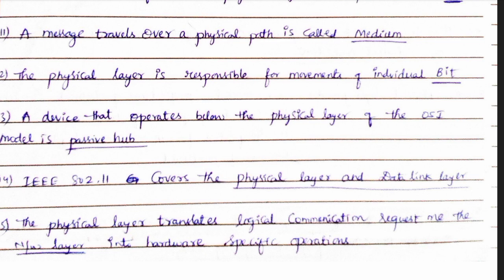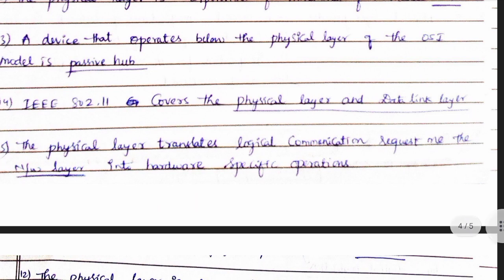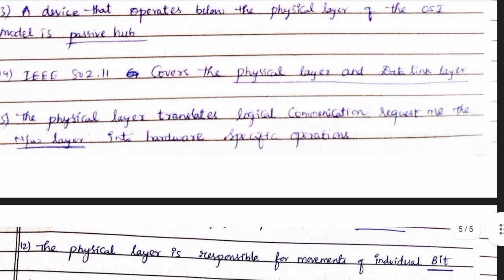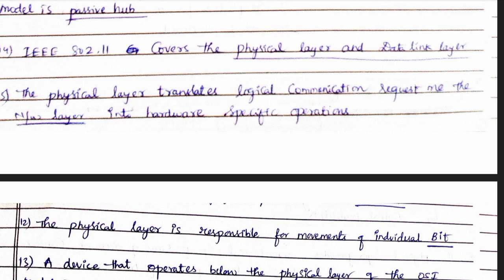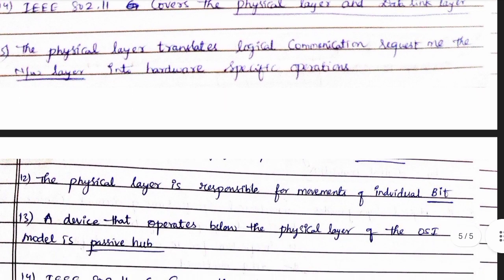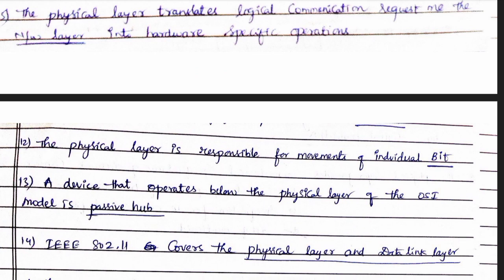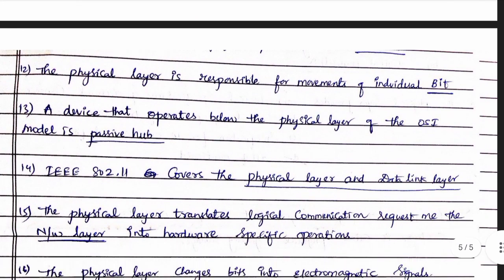IEEE 802.11 covers the physical and data link layers. Local devices like Bluetooth, Wi-Fi fall under this. The physical layer translates logical communication requests from the network layer into hardware-specific operations.